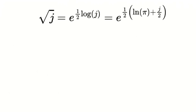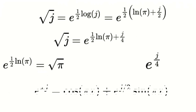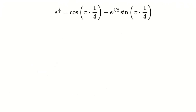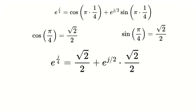Now, substituting this back into our formula for the square root of j, we get e raised to the power of (1/2)·(ln(π) + j/2). Distributing the 1/2, we split this into two terms. The real part is e^((1/2)·ln(π)), which simplifies to √π. The virtual part is e^(j/4). Using the exponential formula with x = 1/4, we get cosine(π/4) plus e^(j/2) times sine(π/4). Since cos(π/4) and sin(π/4) both equal √2/2, e^(j/4) simplifies to √2/2 plus e^(j/2) times √2/2.